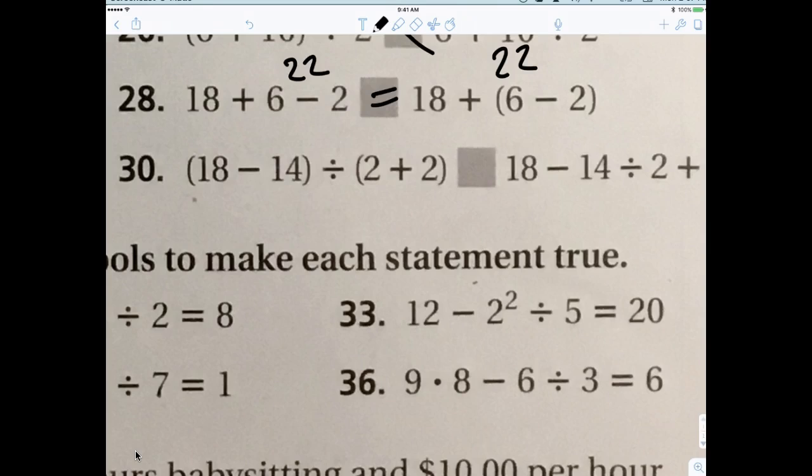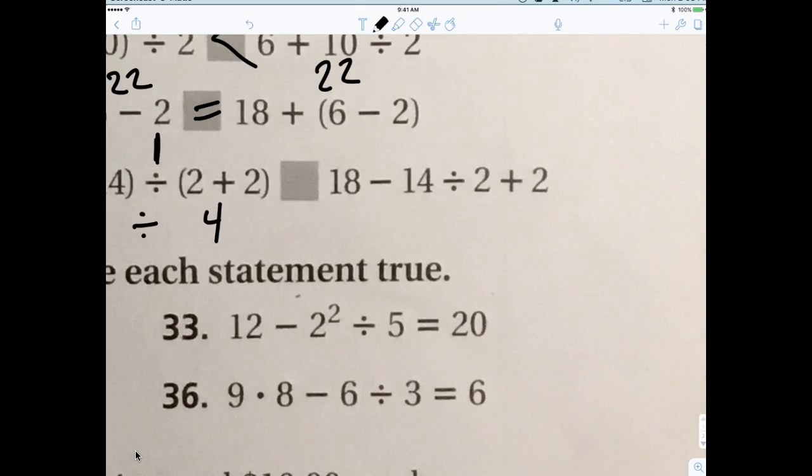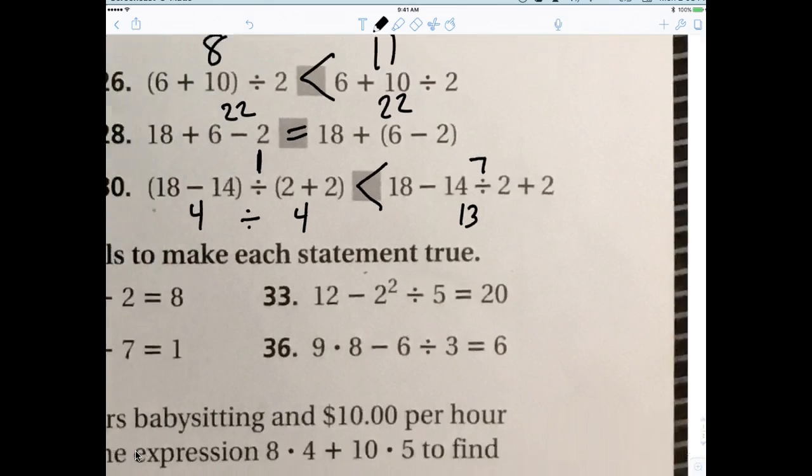Okay. So, 18 minus 14 equals 4. Good. 2 plus 2. Good. Is 4. So, it's 0. Wait a minute. Oh, it's 1. That's okay. So, this is 1. And then, so, you do 4 divided by 2. You mean 14 divided by 2, yeah. Which is 7. Good. And then, we do 18 minus 7. Good. Equals 11. Plus 2 is 13. So, it's a symbol for less than. Very good.